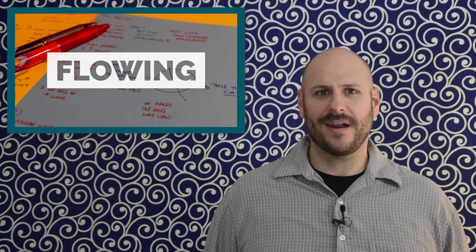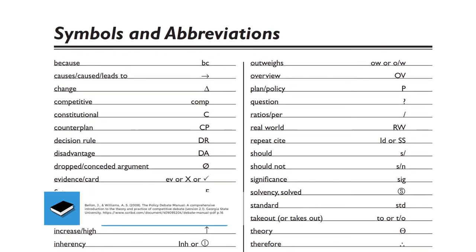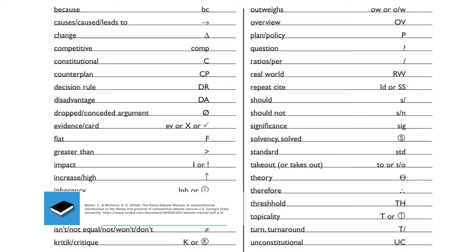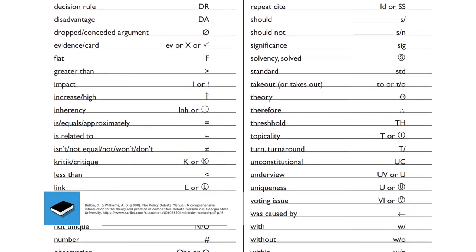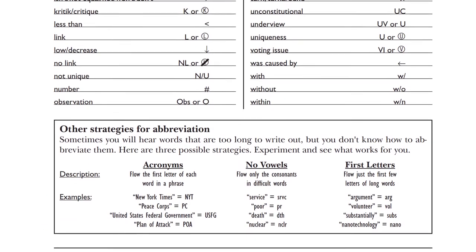Second, develop a shorthand. Try to come up with some common symbols and abbreviations that make it easier for you. Also, there are going to be times when you hear words and terms in the debate that are too long to flow. Using acronyms or the first few letters may be enough to do the trick.